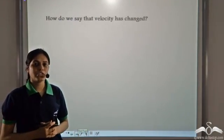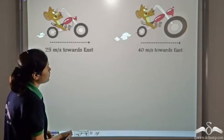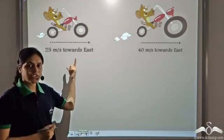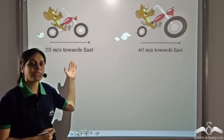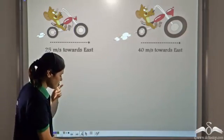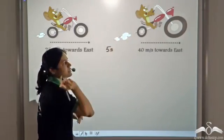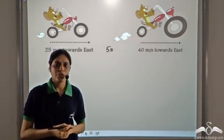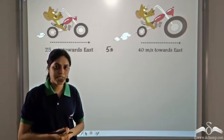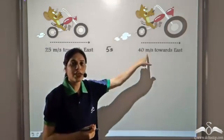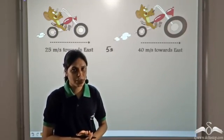Now, how does the velocity of a body change? Jerry is initially travelling with a velocity of 25 meters per second towards east. After 5 seconds, he was travelling with a velocity of 40 meters per second towards east. Is he accelerating? Yes, he is accelerating because his velocity has changed. What is the acceleration in this case?